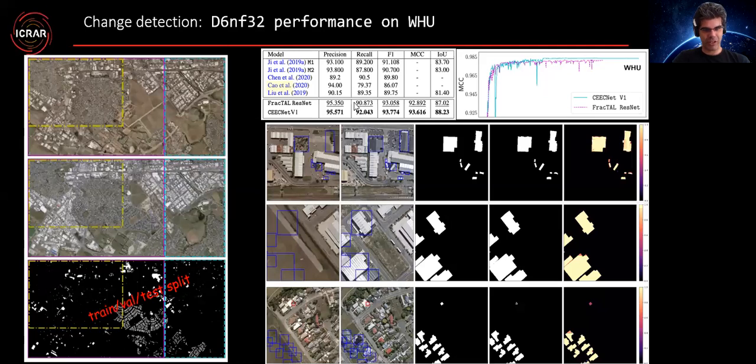We also managed to achieve state-of-the-art performance on Google. We have to note here that the other people that have tried on this, they haven't performed the standard splitting. So the standard train-test splitting does not exist here. But as we describe in the paper, actually the splitting we did removes the spatial correlation because the training and the testing areas are spatially separated.